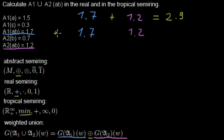So for the tropical semi-ring I'm taking the minimum of those weights, and that is where the lowest weight of both of them is 1.2. And now I have the weights for this word in the union of the two weighted automatons for both the real and the tropical semi-ring.